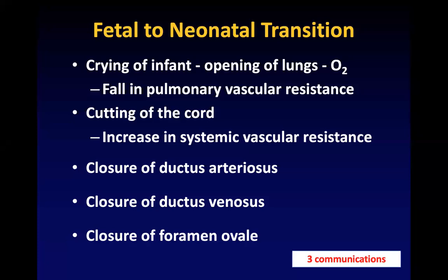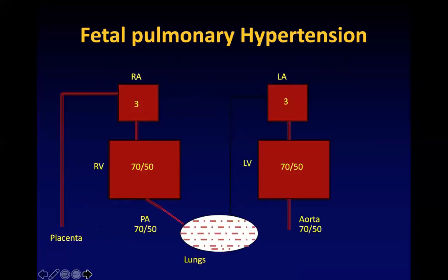These two events which occur at birth — a fall in PVR and a rise in systemic vascular resistance — lead to closure of three vessels or three openings or three communications. These communications which close are: closure of the ductus arteriosus, closure of the ductus venosus, and decreased flow across the foramen ovale. These three vessels close because of the rise in systemic vascular resistance and fall in pulmonary vascular resistance.